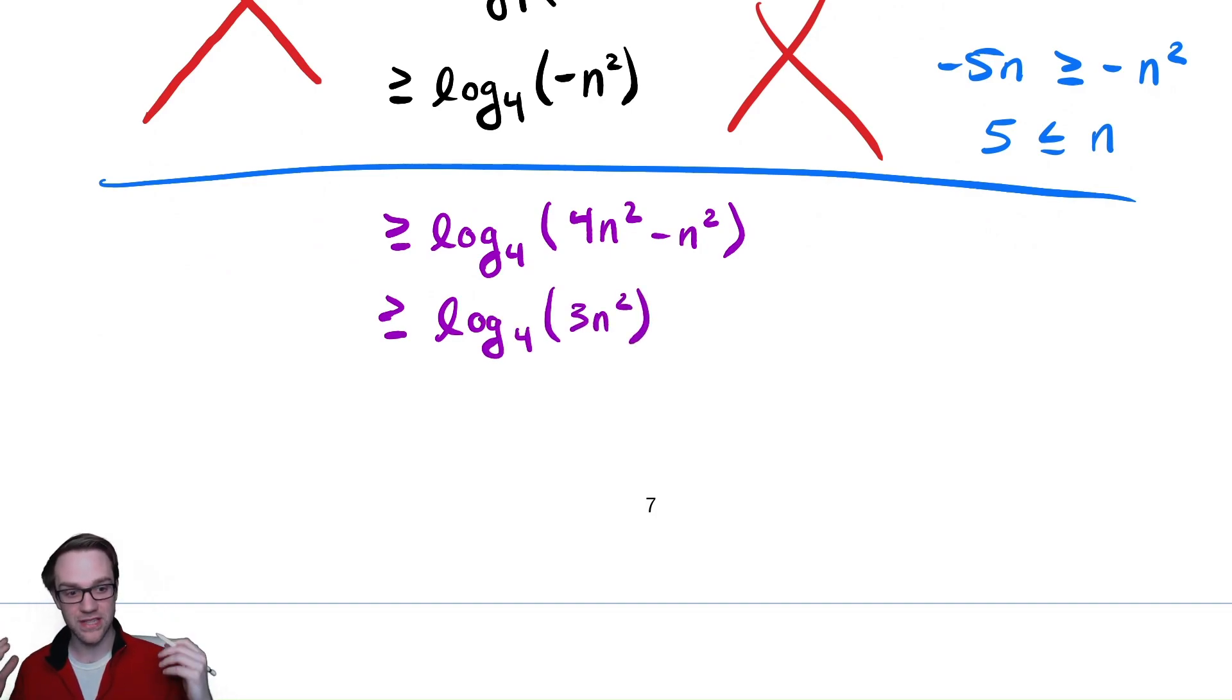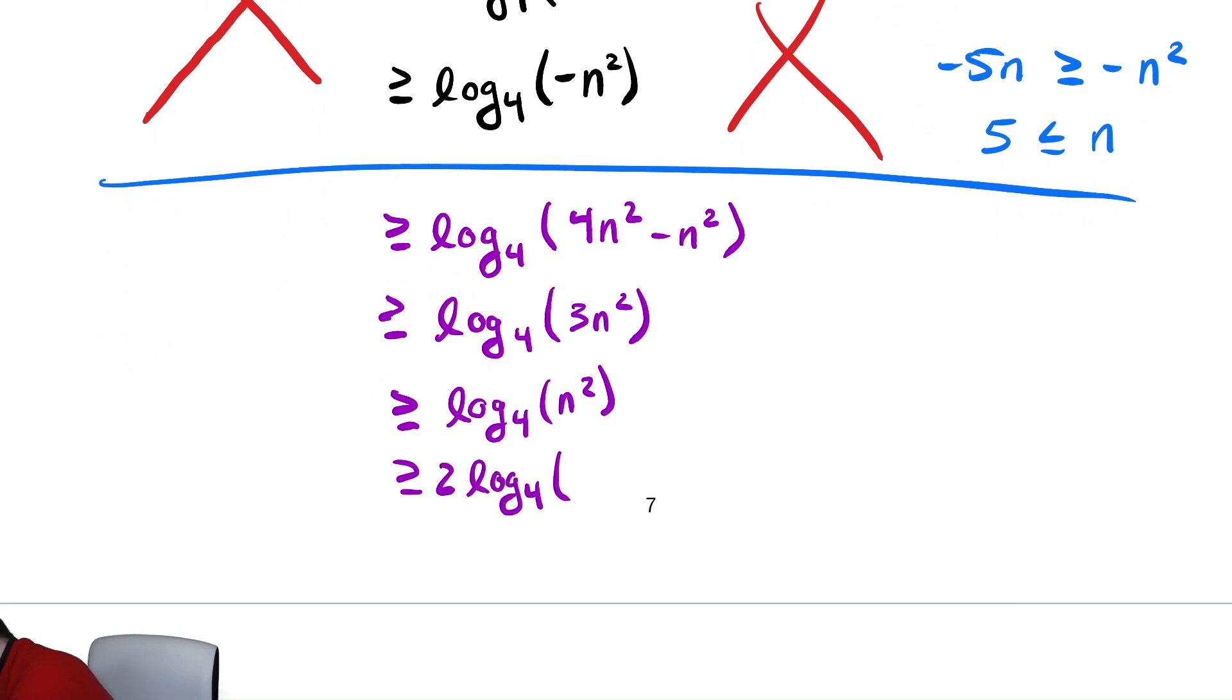And now we're in similar territory to what we saw before. We can drop the 3, reduce it down to a 1, and that makes our lives much easier. So, we reduce the 3 down to a 1. And we have log base 4 of n². We can use our log property to bring the 2 out front, and we have 2 log base 4 of n. I just realized I forgot to include this caveat, which is this only is true when n greater than or equal to 5.